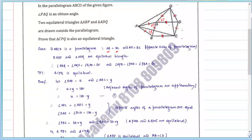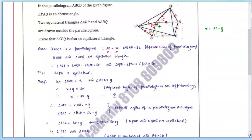Let BAD angle equal Y. So X plus Y equals 180, because adjacent angles of a parallelogram are supplementary. So X equals 180 minus Y. Now angle ADC equals angle ABC — opposite angles of a parallelogram are equal.